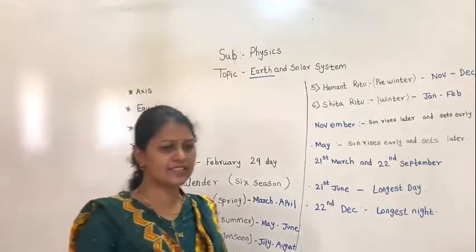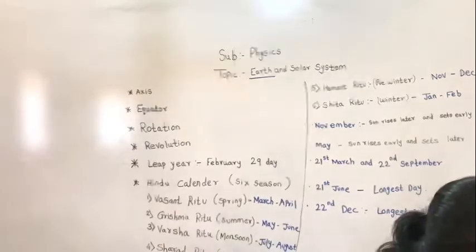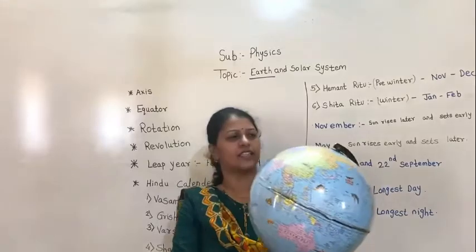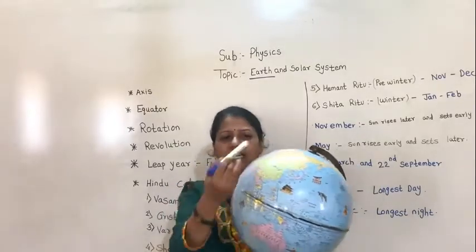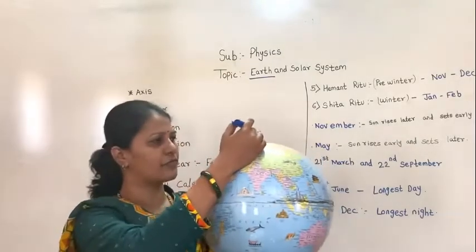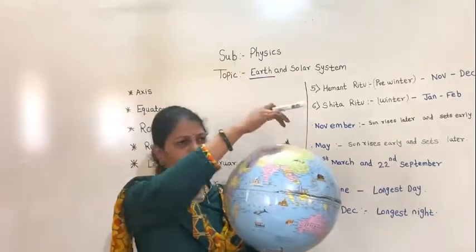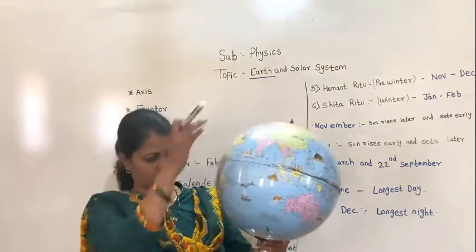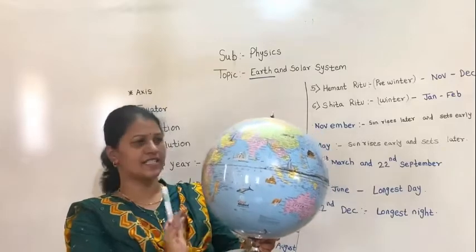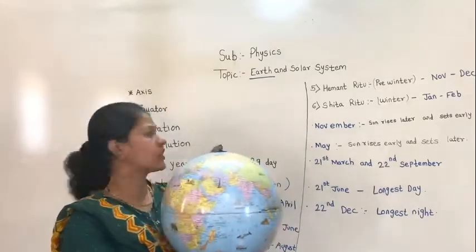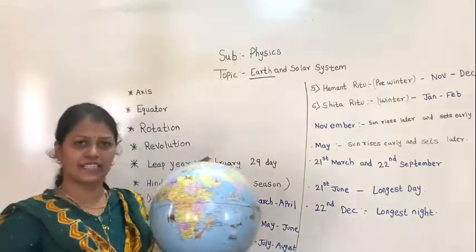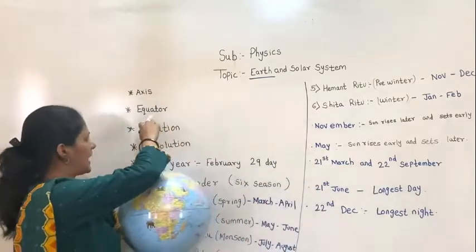Let me show you using this globe. The axis is an imaginary line that passes from the centre of the Earth, from the North Pole to the South Pole. This imaginary line is called the axis.